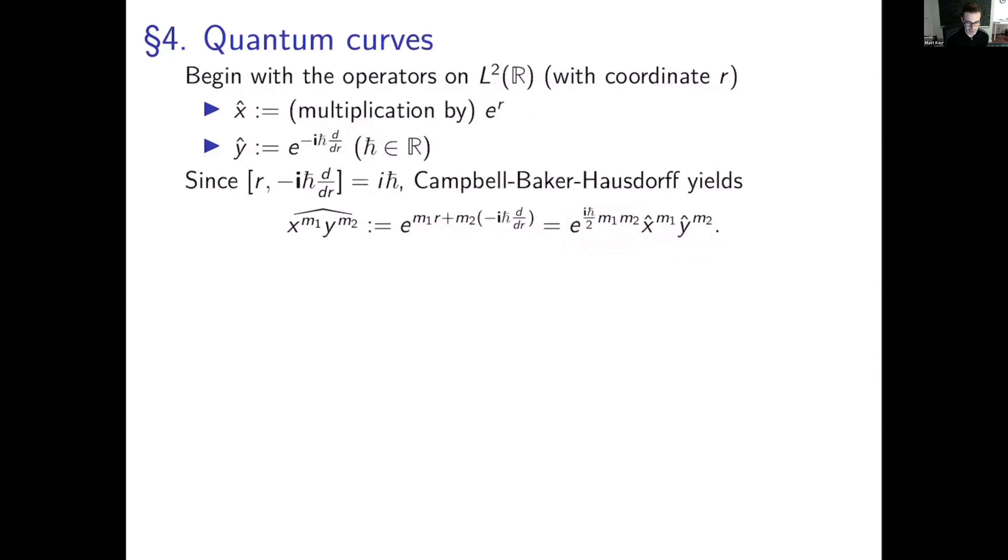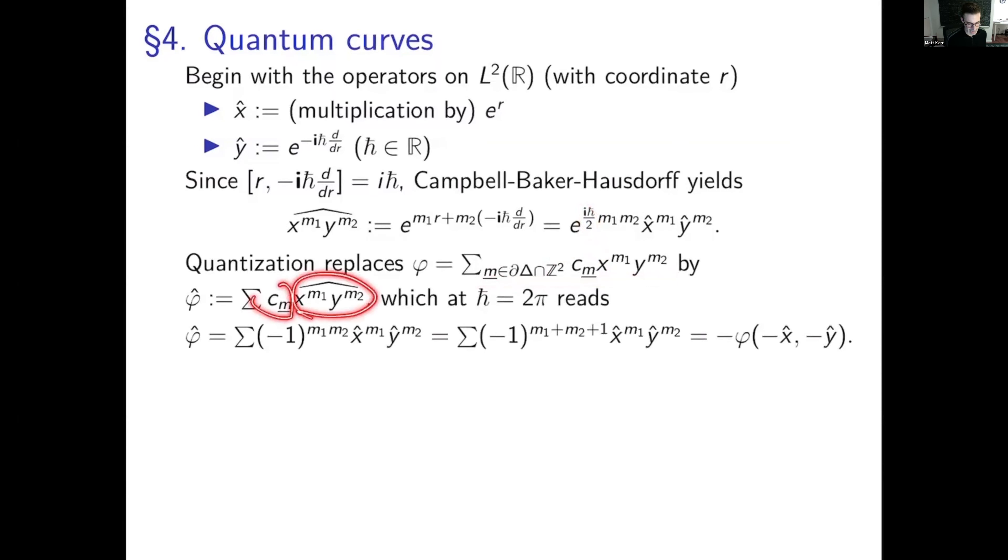So the reason why I'm doing this, even though I am going to work with h bar equals two pi, where exponentially these things will commute. So when I take h bar equals two pi, these will actually commute. But this does not work out to be e to the two pi i times an integer. It works out to be e to the i pi times an integer. And so there's a sign. You have to get the sign right, because otherwise it doesn't work with varying h bar. So quantization is going to replace phi equals some coefficients, x to the m1, y to the m2, this is the Laurent polynomial, by phi hat equals cm times the hat of the monomial. And h bar equals two pi, this becomes, there's a missing cm here. Sorry about that. In fact, that's so distracting. I'll just write it in cm cm.